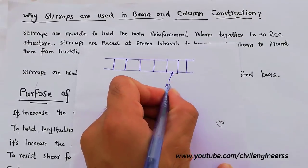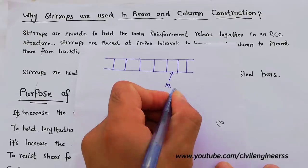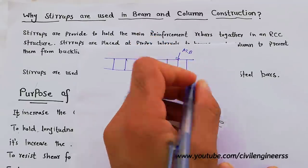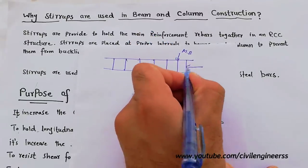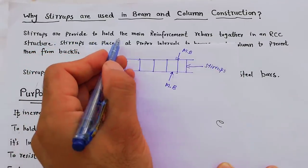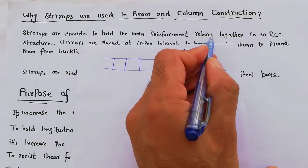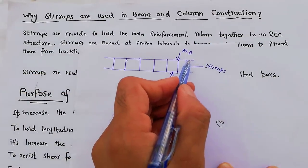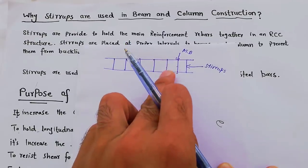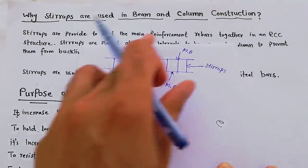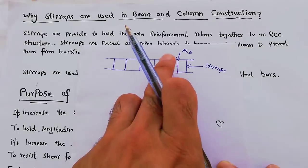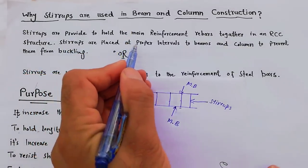In a beam, these are the main bars, and this is called stirrups. Stirrups are provided to hold the main reinforcement rebar together in an RCC structure. These are the main bars in the beam, and these are the stirrups — that is why we use stirrups in RCC structure.